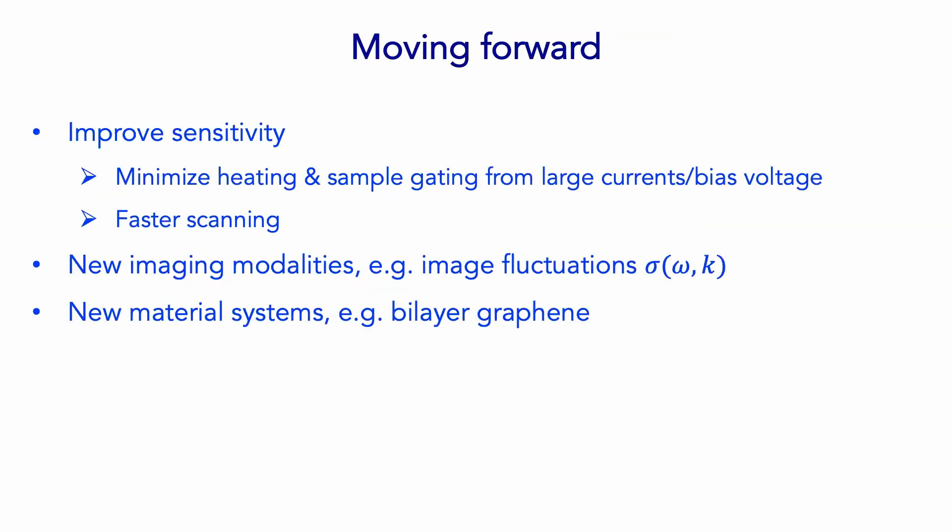Moving forward, we'd like to improve the sensitivity. We always want to take these images faster and be able to pass less current through these devices. We're passing about 150 microamps, which was fine at room temperature and medium temperatures, but at lower temperatures we begin to heat the device. Those images each took about seven or eight hours, so that's something we're improving. We're pushing toward new imaging modalities where we can image fluctuations, and we're also moving toward looking at new material systems, in particular bilayer graphene, to understand the electron-electron scattering length there.